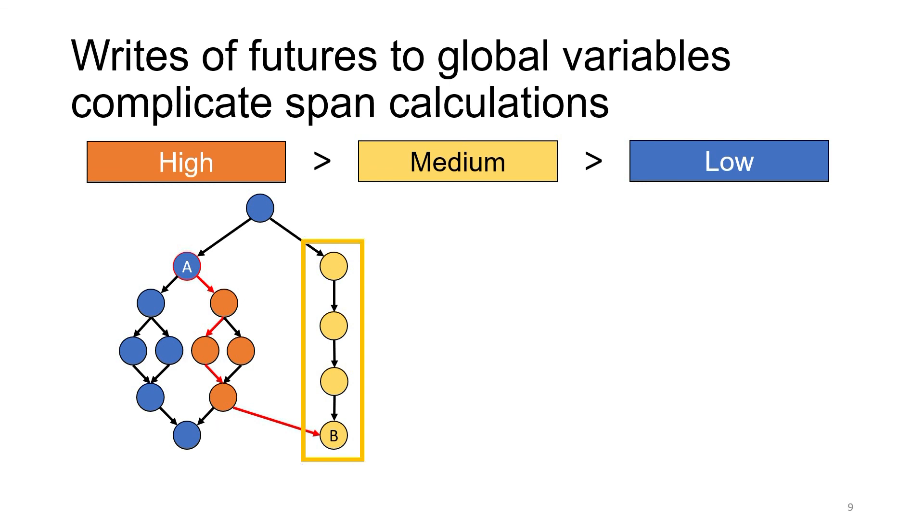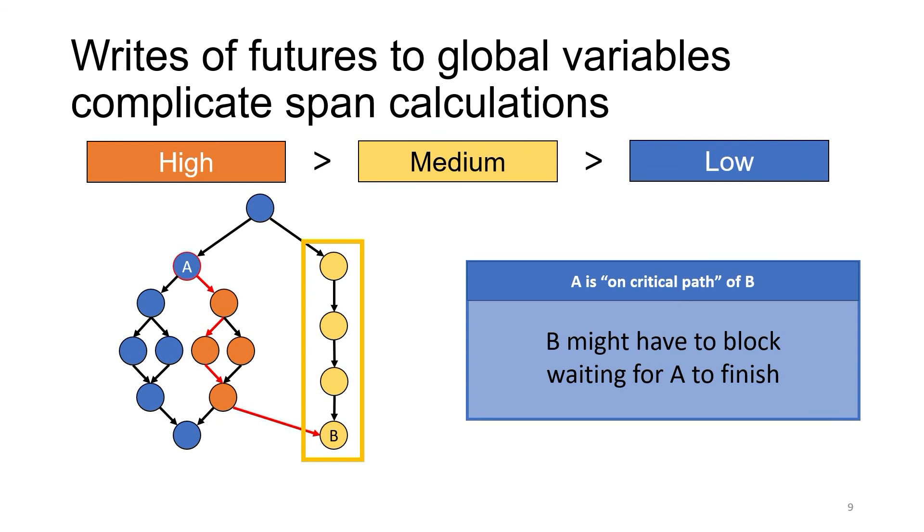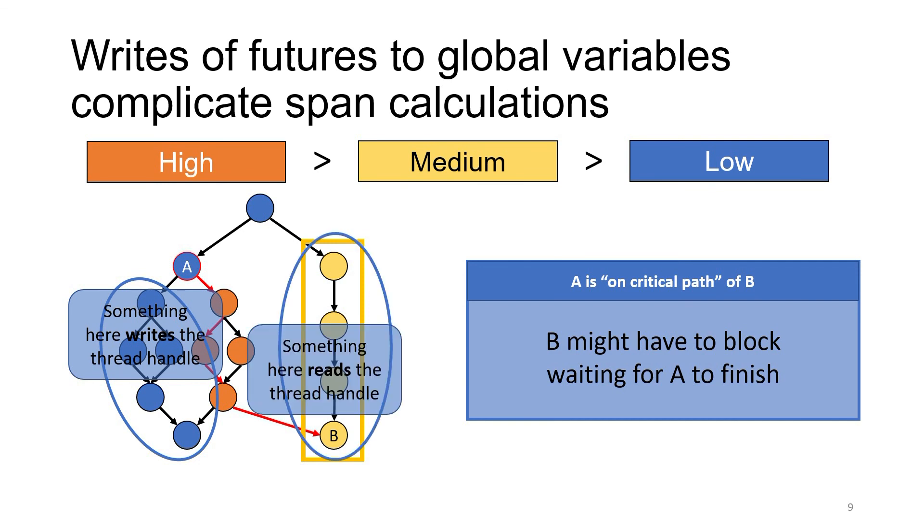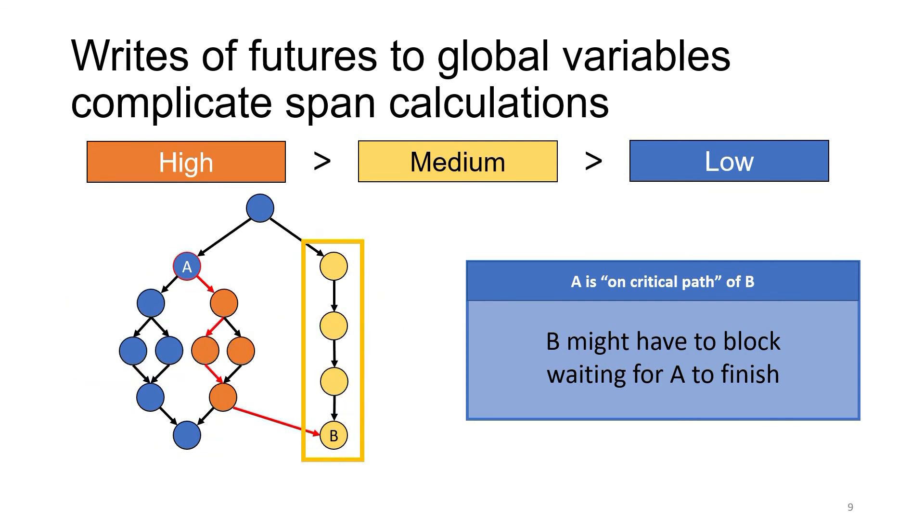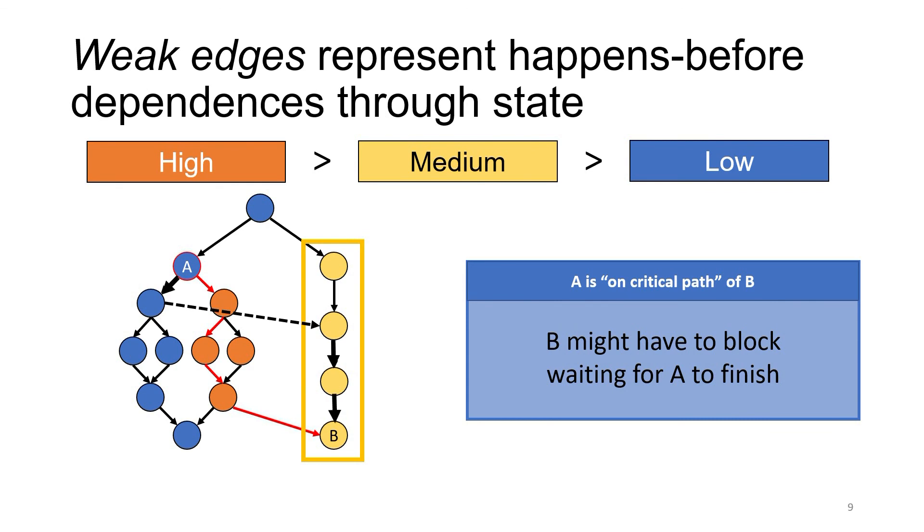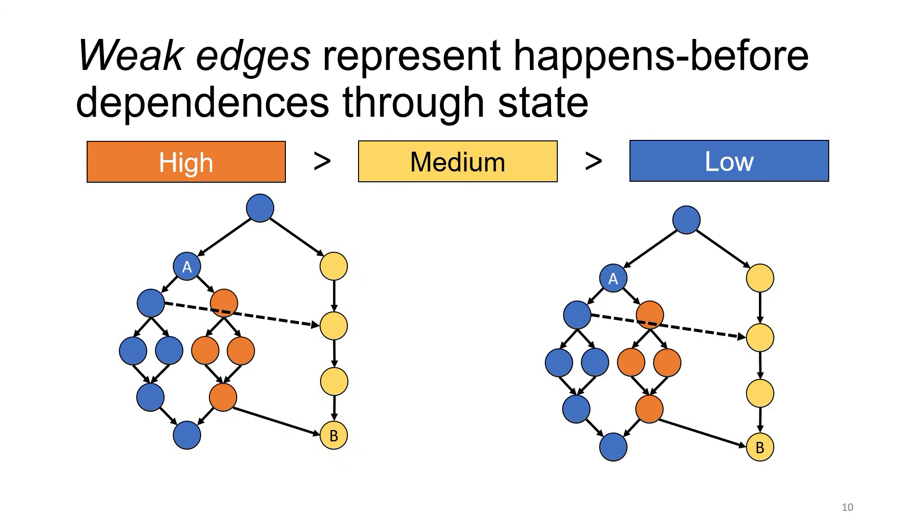The reason is that, in order for this dependency edge to exist, the medium-priority thread must have somehow obtained a handle to the high-priority thread. That can only have happened through global state, meaning that some code in here wrote the high-priority future's handle into a global variable, and some code in here read it. The write must have happened before the read, so we have an implicit dependency. Let's be more concrete and say that the write and read are these vertices I've connected with the dotted line. We'll call that dotted line a weak edge, and it indicates the implicit dependency that the target of the edge had to have happened after the source at runtime. Together with these explicit dependency edges, that tells us that node A must have already been executed before node B is ready. We need to alter the definition of a thread's span accordingly.